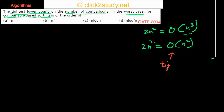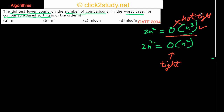So 2n² in O(n²) is tight, while 2n² in O(n³) is correct but not tight. You can apply the same idea to Omega notation as well, since Omega is just the opposite of O.